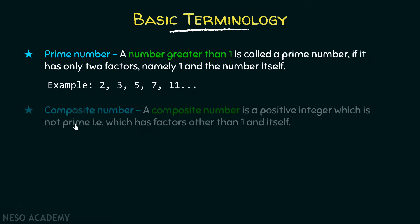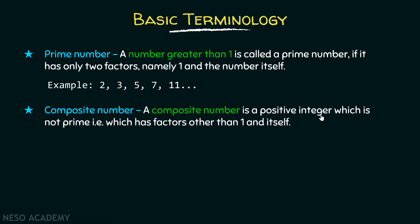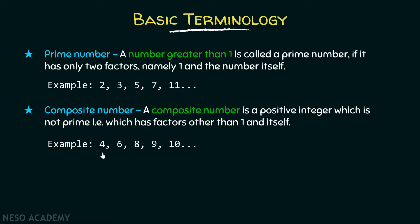On the other hand, a composite number is a positive integer which is not a prime number — that is, which has factors other than one and itself. For example, 4, 6, 8, 9, 10. Not only do they have factors one and itself, but they also have factors other than one and itself. Therefore, they are composite numbers.